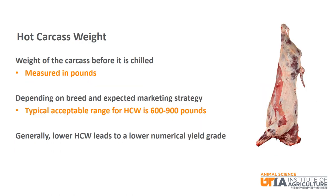Hot carcass weight is the weight of the carcass before it is chilled and is measured in pounds. Depending on the breed and expected marketing strategy, the typical acceptable range for hot carcass weight is 600 to 900 pounds. Generally, the lower the hot carcass weight, the lower the numerical yield grade.